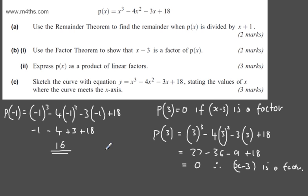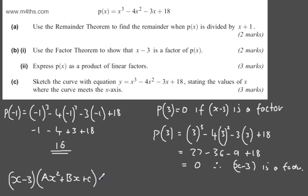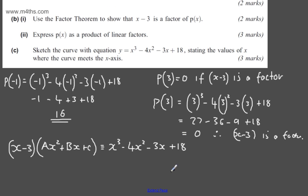In the second part for 3 marks, we need to express p(x) as a product of linear factors. We know that x - 3 is one of the linear factors. So I'm going to set up an identity: (x - 3)(ax² + bx + c) ≡ x³ - 4x² - 3x + 18. You can, of course, use polynomial long division if you like.